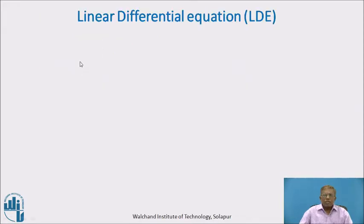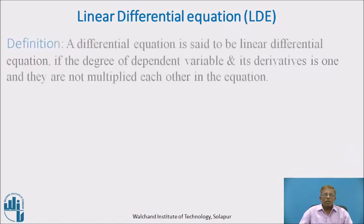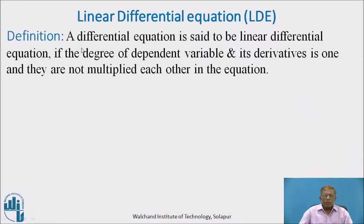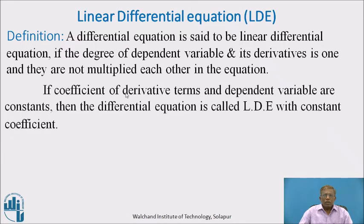This is according to the definition of order and degree of a differential equation, which we learned in lower classes. Now let us start with linear differential equation, denoted by LDE. Definition: A differential equation is said to be a linear differential equation if the degree of the dependent variable and its derivatives is 1 and they are not multiplied by each other in the equation. If the coefficients of derivative terms and the coefficient of the dependent variable are constants, then the differential equation is called a linear differential equation with constant coefficients.